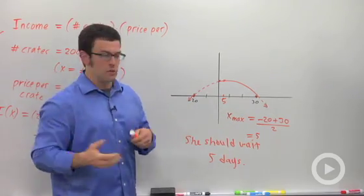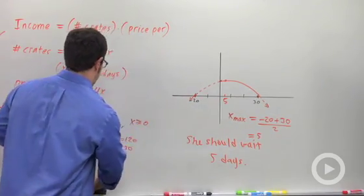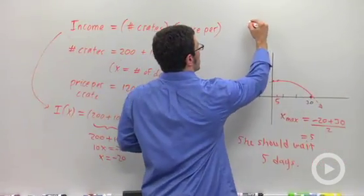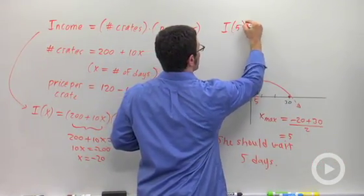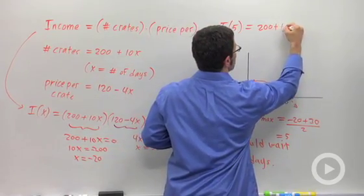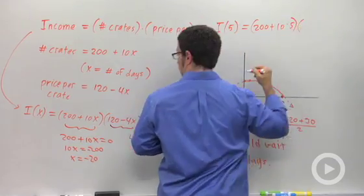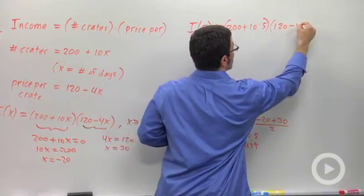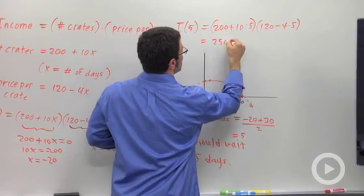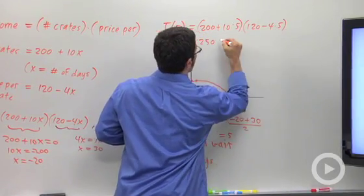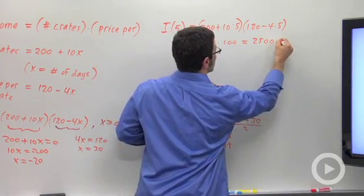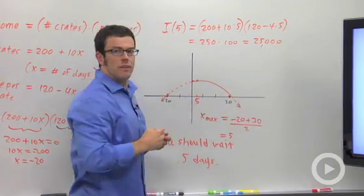If you're curious about how much she would make, you can calculate that by plugging 5 back into the function. Let's find I(5). We have 200 plus 10 times 5, which is 250, times 120 minus 4 times 5, which is 100. That's 250 times 100, which equals 25,000. She'll make $25,000.